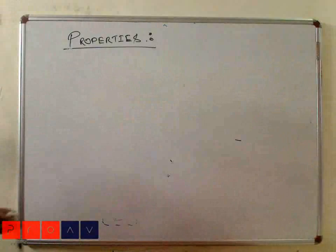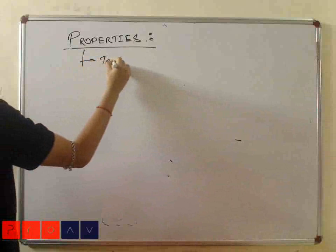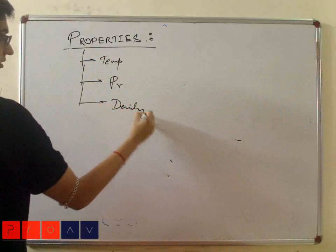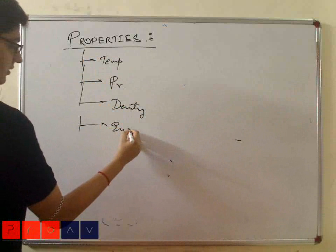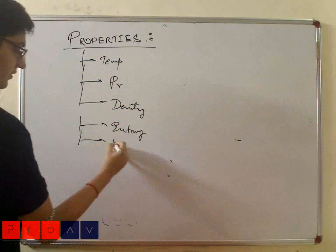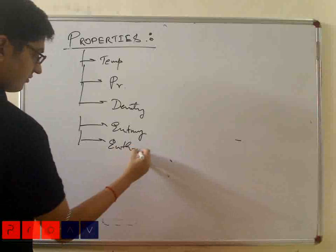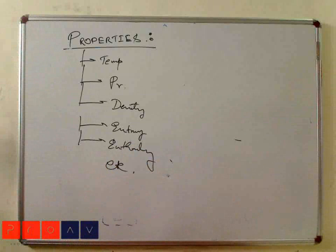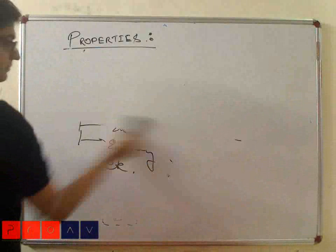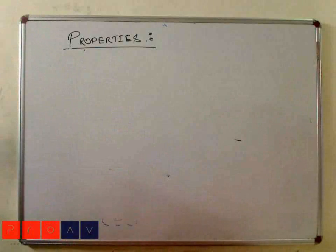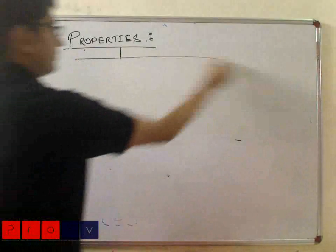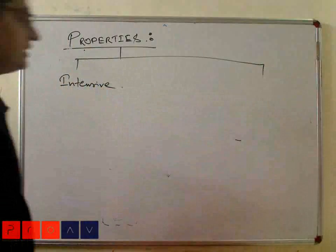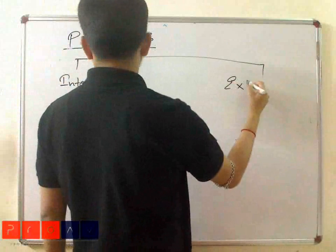Properties include temperature, pressure, density, entropy, enthalpy, and many more. Depending on the type of property, it is of two types: one is intensive, and another one is extensive.